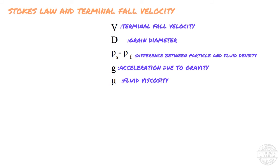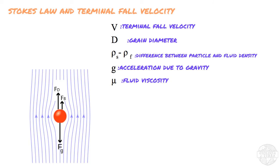The terminal fall velocity will be achieved when the downward movement stops accelerating and the particle begins to fall at a constant velocity. This occurs when the viscous resistance force and the buoyancy force become equal to the weight force due to gravity.